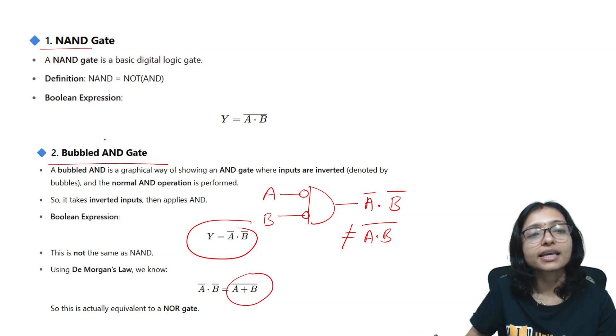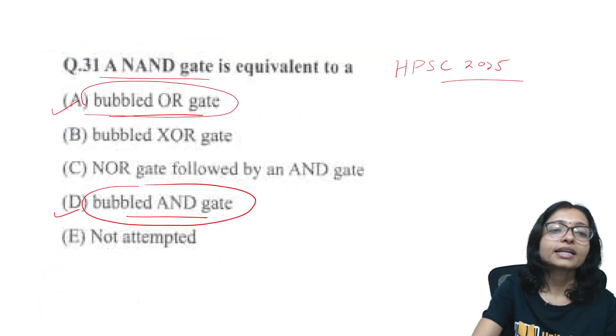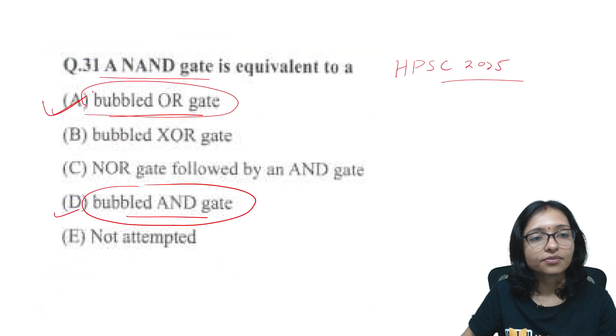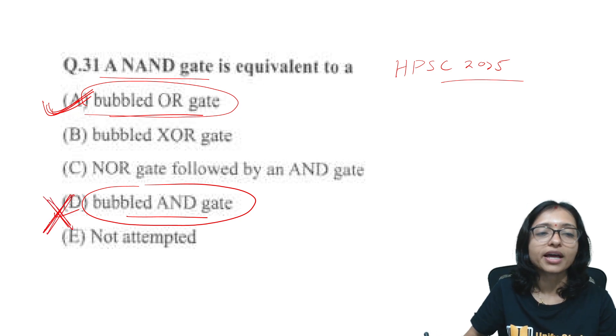That's why we can't say that a bubbled AND gate is equivalent to bubbled AND. So final answer will be definitely this is the final answer, whatever official answer given this is correct, this is wrong and I am sorry for that.